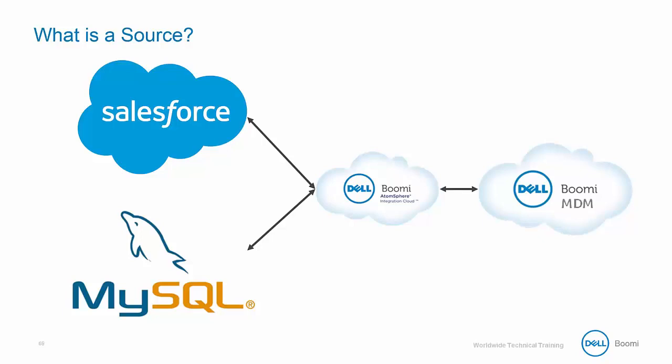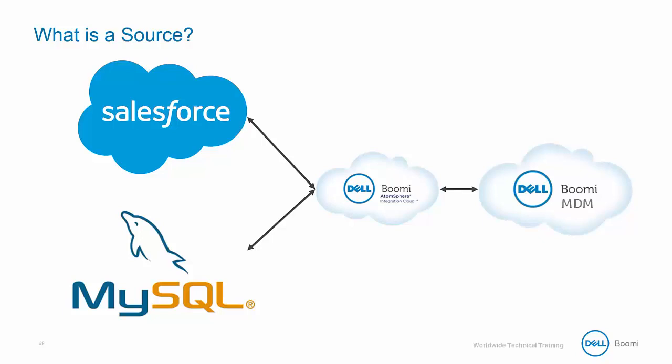In order to synchronize our source applications between the AtomSphere and MDM platforms, we need to identify our source systems within our MDM solution. To do this, we'll need to access the Sources tab located on the MDM lifecycle panel. Selecting the Sources tab will allow you to create sources within your MDM account. As with most of our MDM tools, the first source you create will give you a small description and a large Create button.